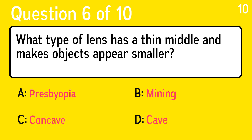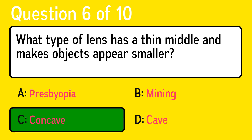Question 6, what type of lens has a thin middle and makes objects appear smaller? The correct answer is C, concave.